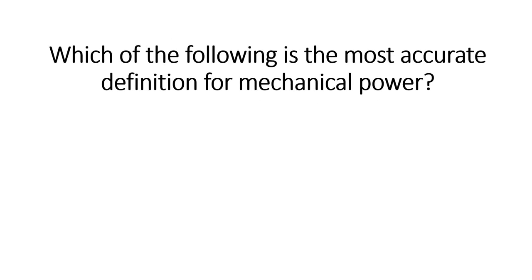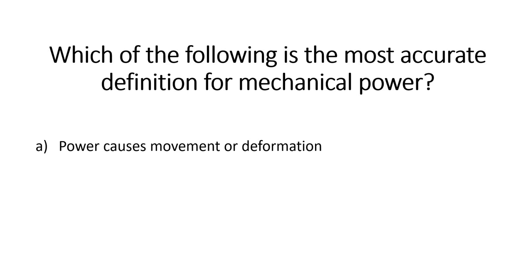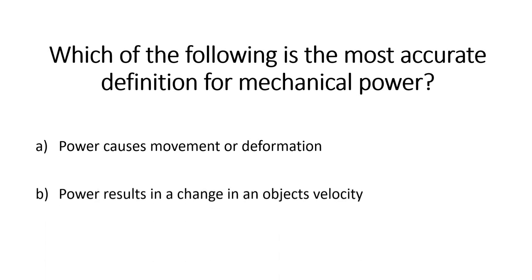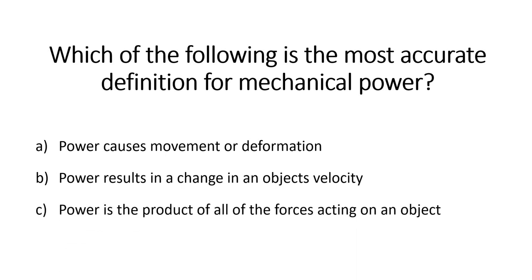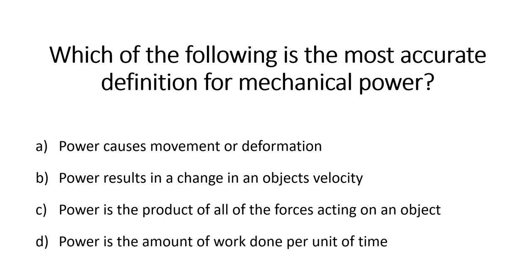Which of the following is the most accurate definition for mechanical power? Is it A. Power causes movement or deformation? B. Power results in a change in an object's velocity. C. Power is the product of all of the forces acting on an object. Or D. Power is the amount of work that is done per unit of time. Have a think about that one.